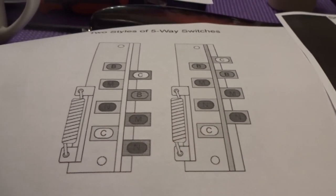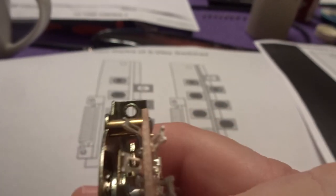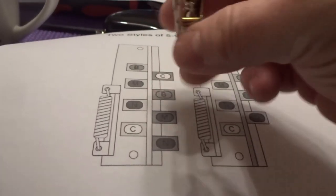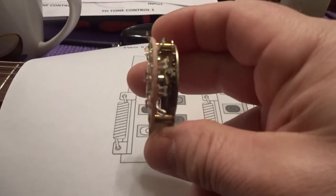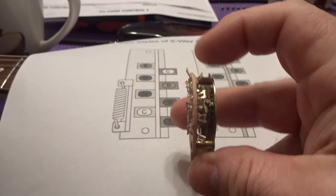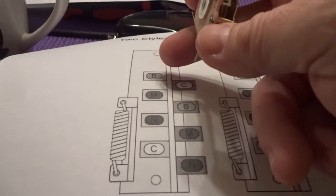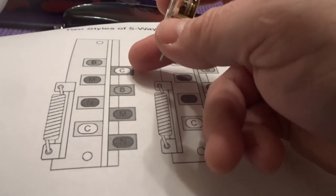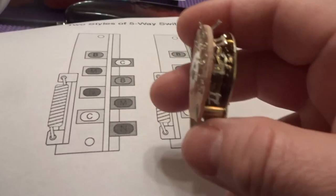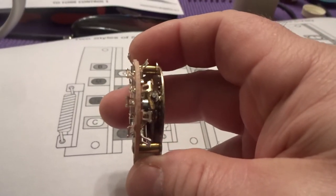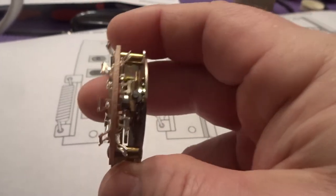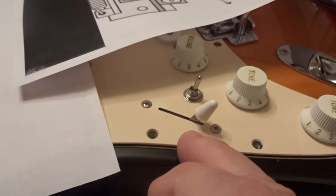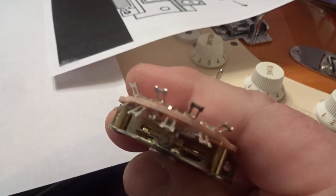Just to go over this briefly, there's two different kinds of blade switches. This one does not have the spring on it. But if we orientate the switch so that the screw holes are on the left side and you're looking at it, this will be bridge, middle, neck, and then your common. And then on this side you got common, bridge, middle, neck. So the switch is basically split in half.